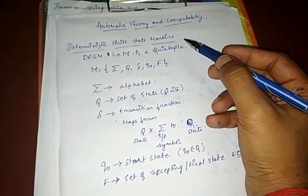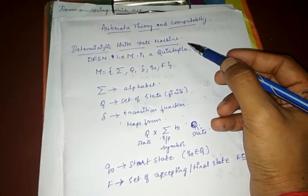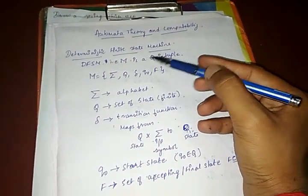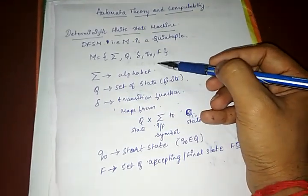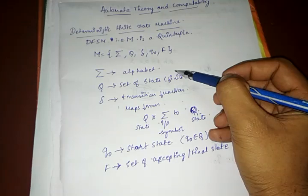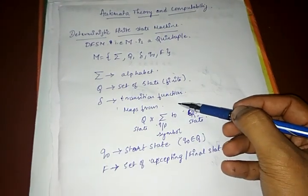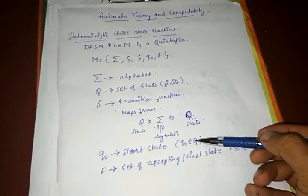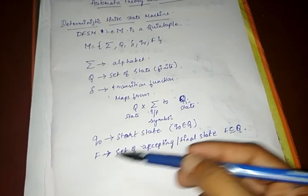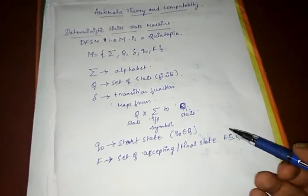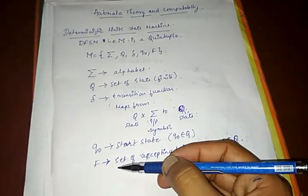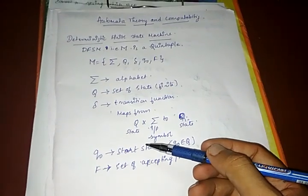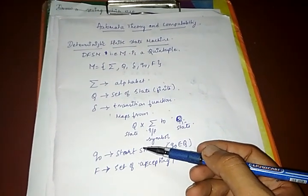In this video I'll be solving a problem on DFSM. DFSM is a 5-tuple which has five entities: Σ, Q, δ, q₀, and F, where Σ is an alphabet, Q is a set of states, δ is a transition function mapped from Q × Σ to Q, q₀ is a start state (q₀ ∈ Q), and F is a set of accepting states (F ⊆ Q). The accepting states can be more than one, but there is always only one start state.